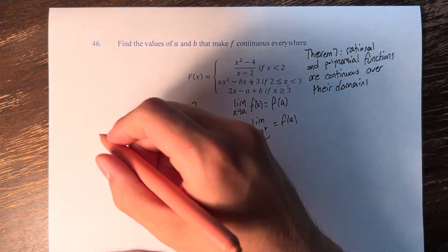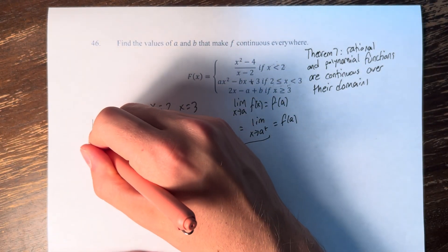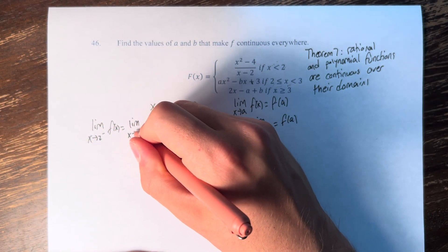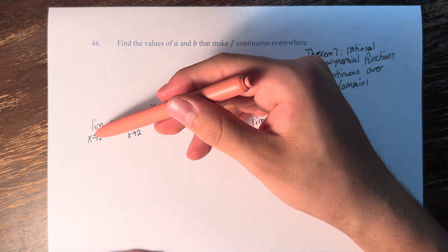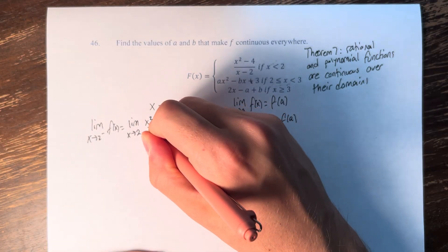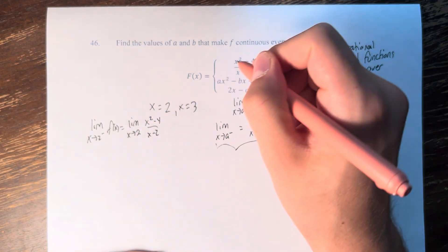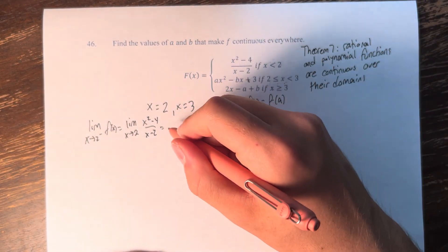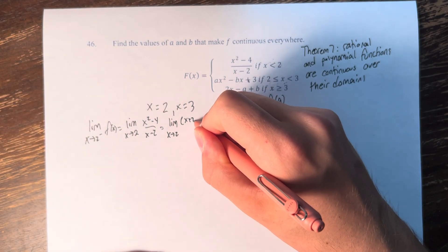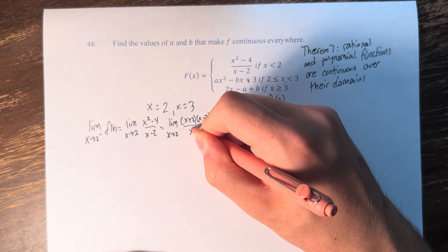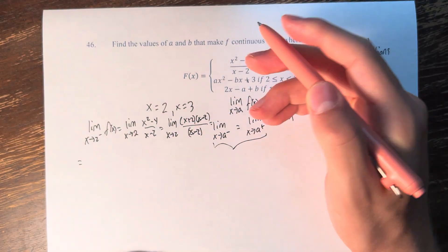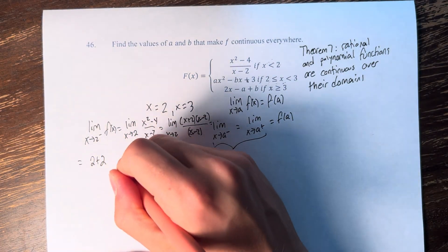Let's start with the limit as x approaches 2 from the left of f(x). This is the limit as x approaches 2 of x squared minus 4 over x minus 2. We can't plug in 2 directly because we'd be dividing by 0. We factor the numerator: (x plus 2)(x minus 2) over (x minus 2). The (x minus 2) terms cancel, giving us the limit as x approaches 2 of x plus 2, which equals 4.